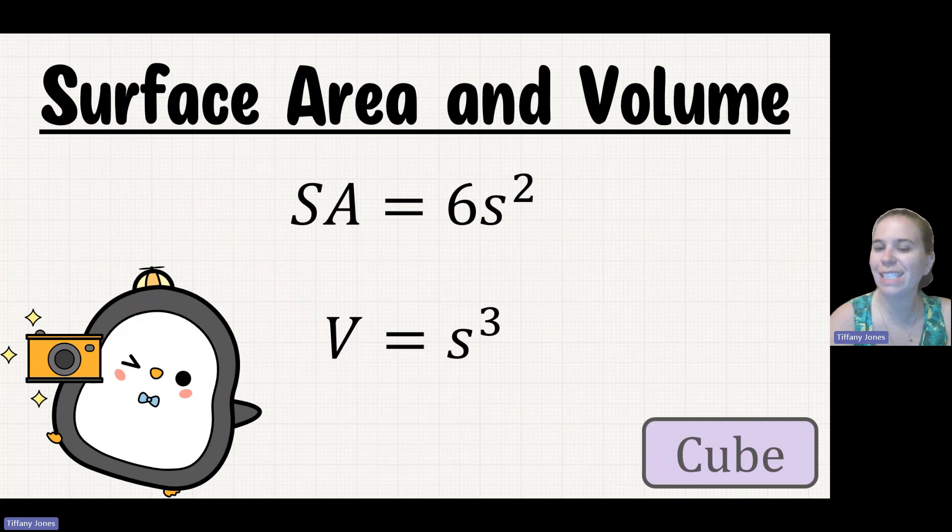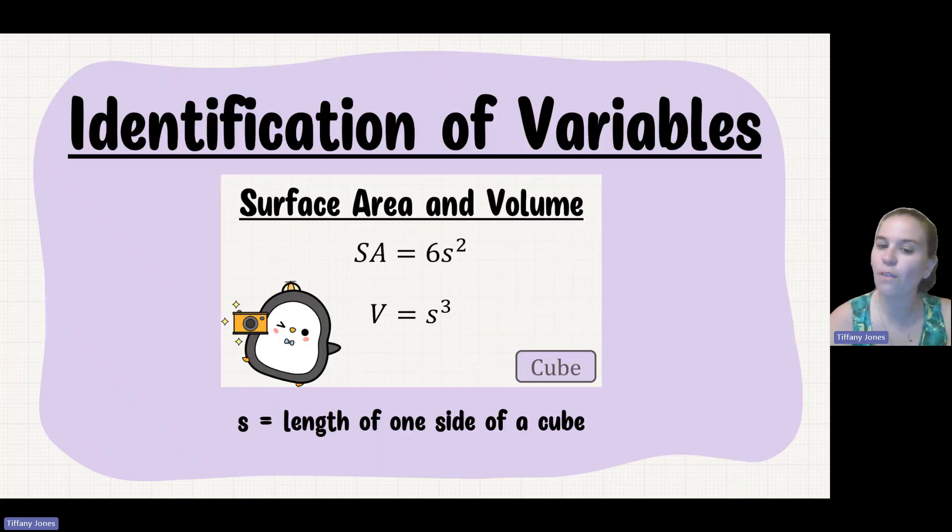So in this case, we have our surface area is 6s squared, and our volume is s cubed, s being the length of one side of the cube.